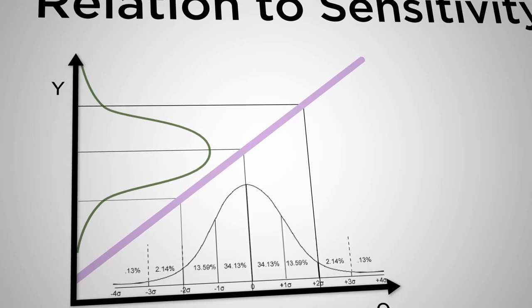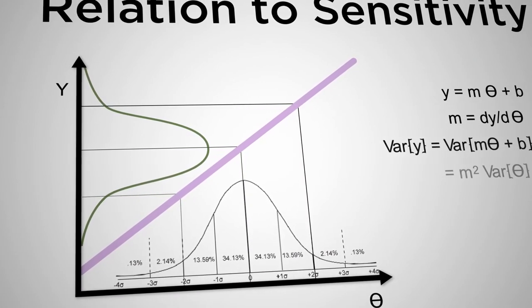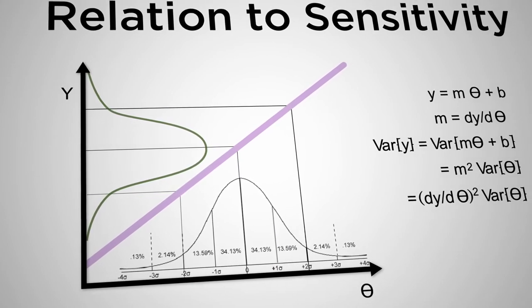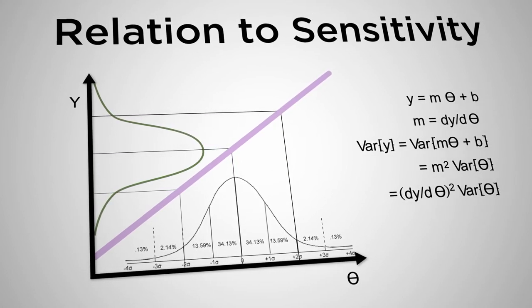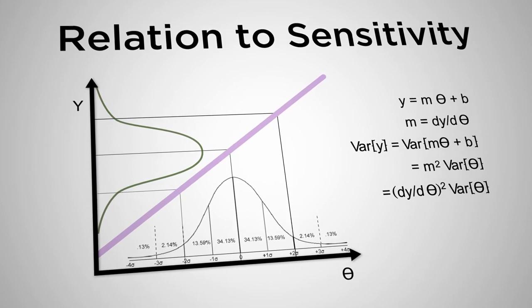So let's next think about analytical methods that just give us some key statistical moments. One important case is models that are linear — models that just involve linear combinations of the variables we're interested in and their coefficients. It turns out that if all we're interested in is the means and variances or standard deviations of our forecast, we can actually get an exact analytical solution for how to propagate uncertainty in linear models. We do this by making use of a series of rules that describe how random variables interact with each other and with constants. A general pattern we see is that in a linear model with multiple terms, each term contributes specific components to the predictive uncertainty.